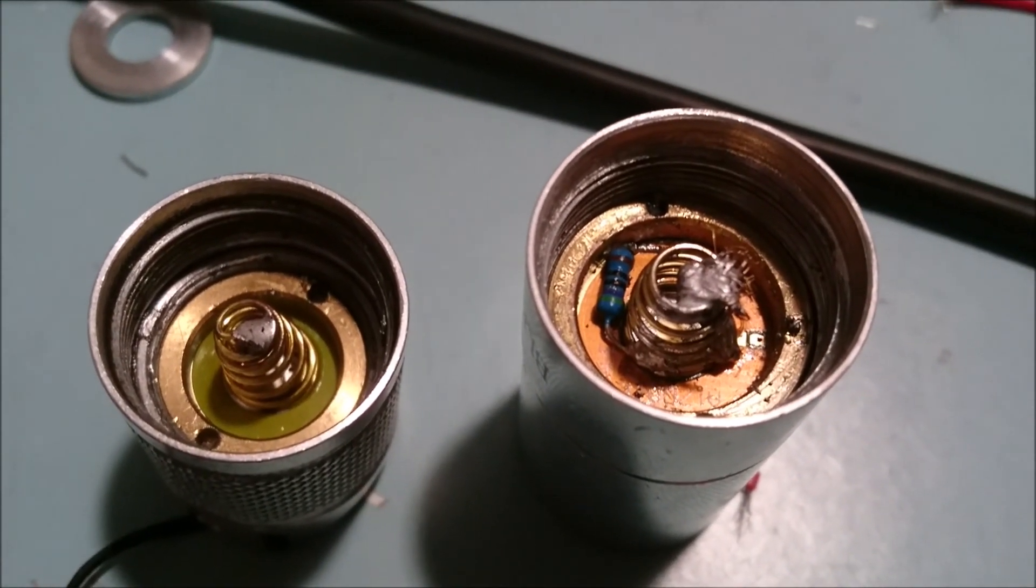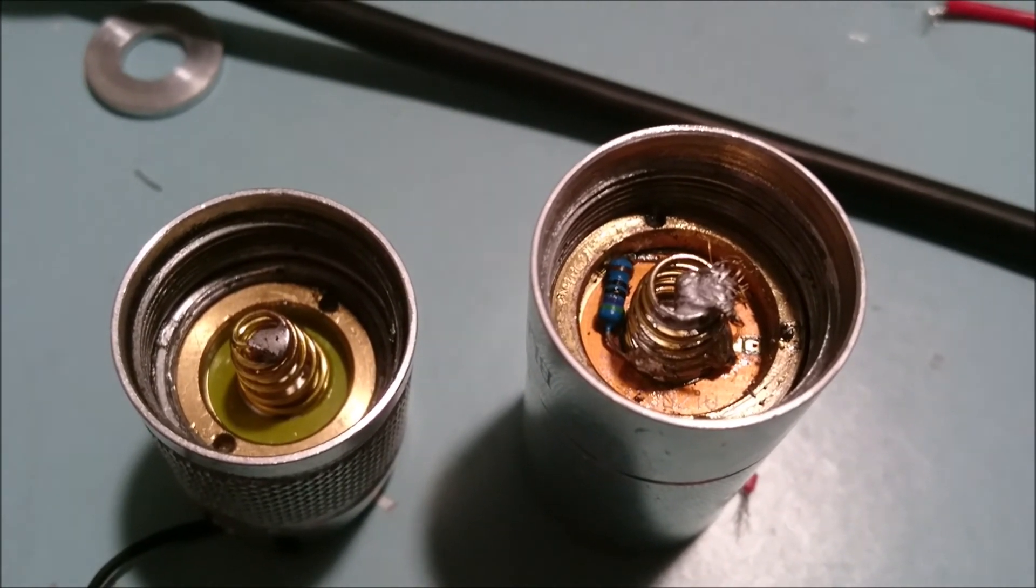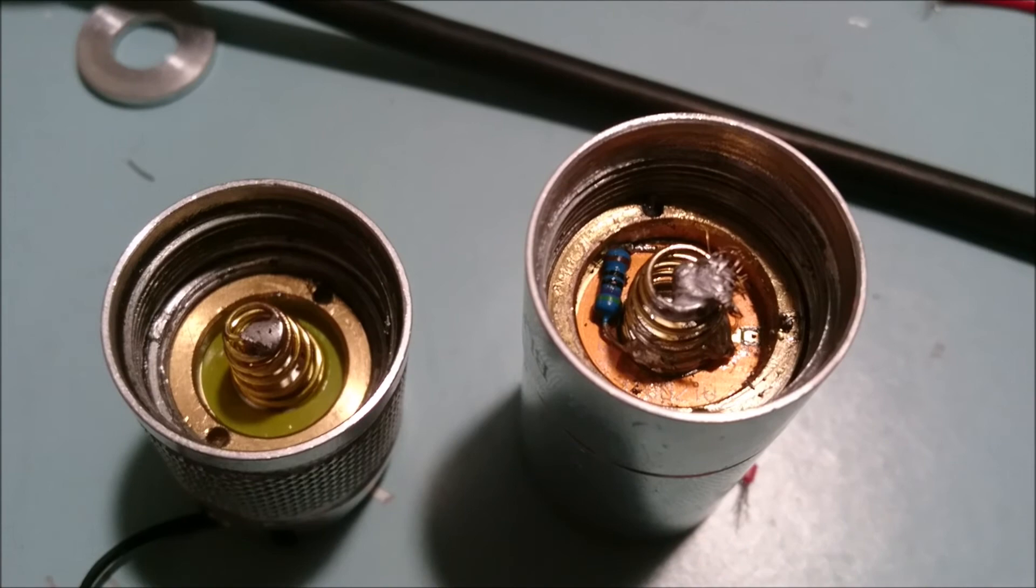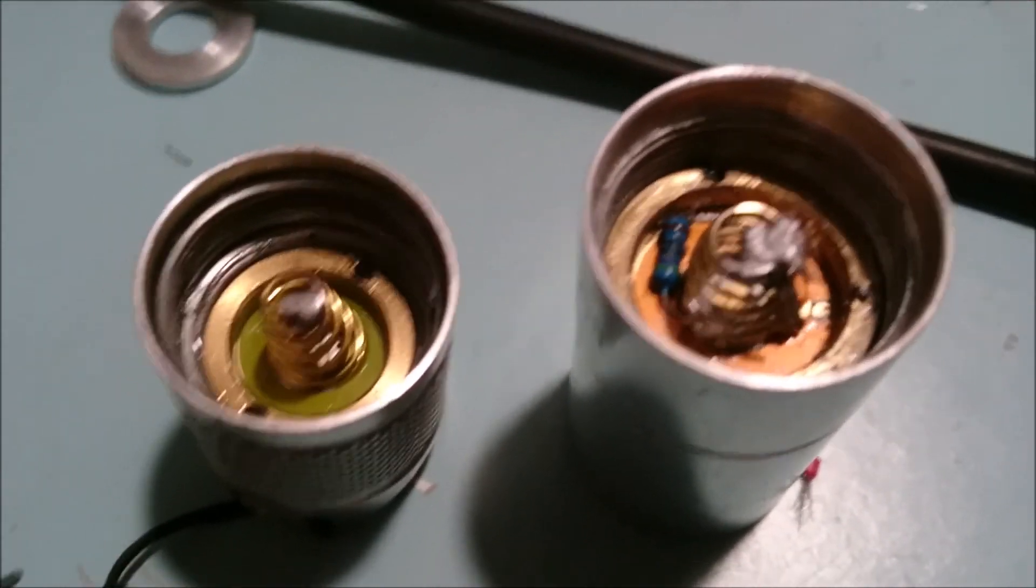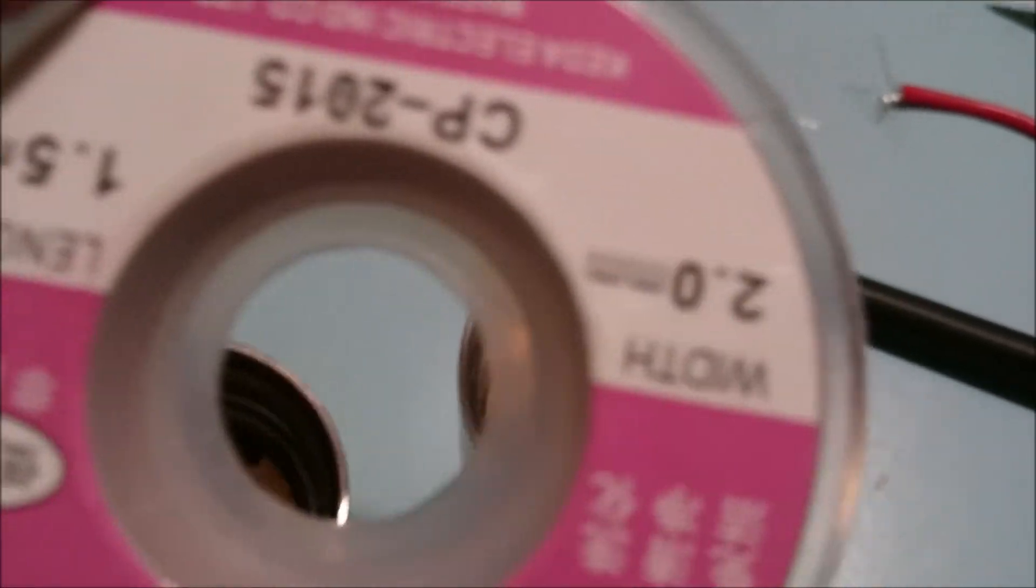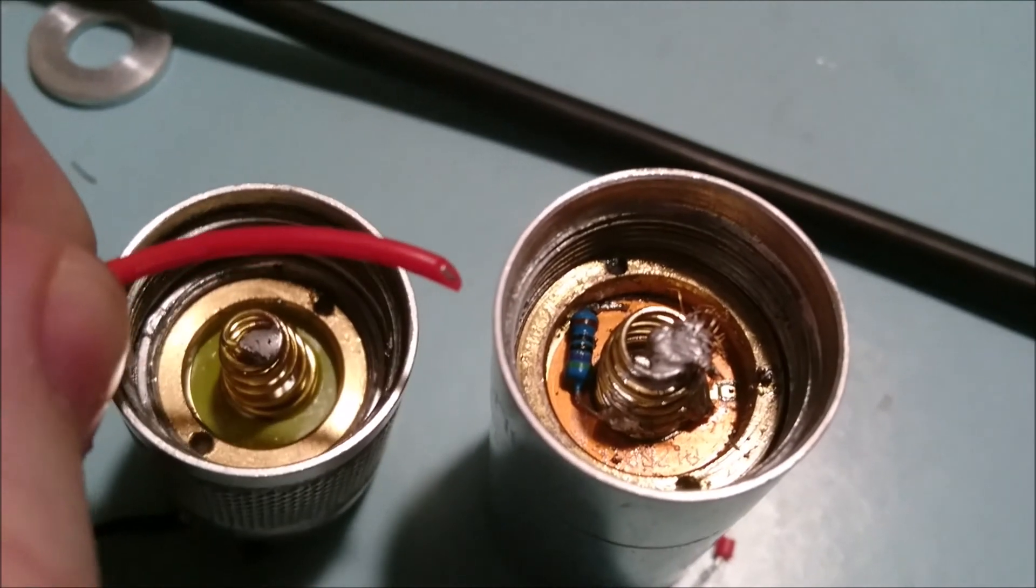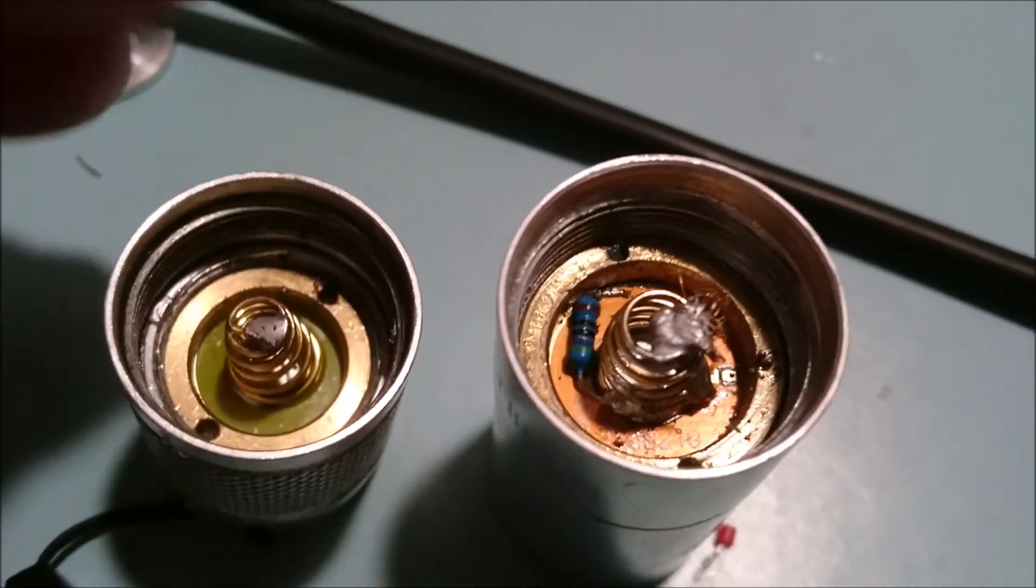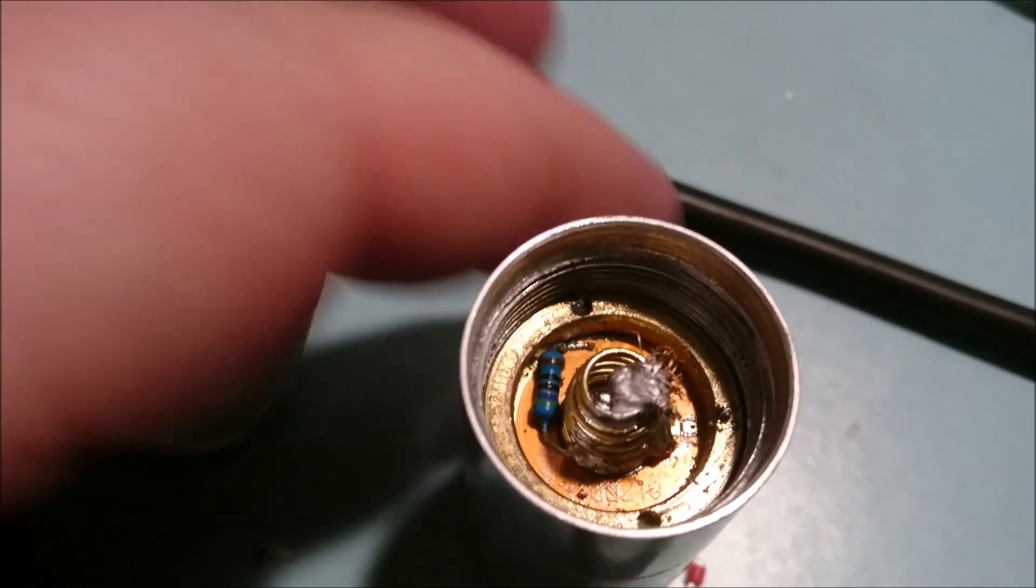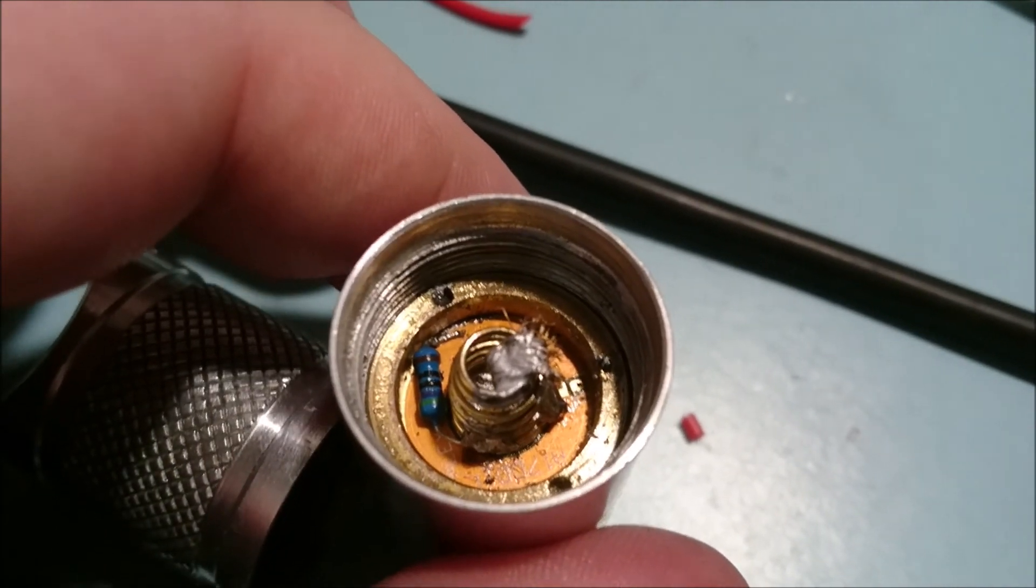Alright guys, I ended up doing spring bypasses on the back and front. No point at you guys watching anyway because I've already got a video on that. Here we go, back and front. I used braided solder. Usually I would use like 20, 22 gauge wire. But it's pretty tight spaces in there. So I just went with the braided solder on the inside.